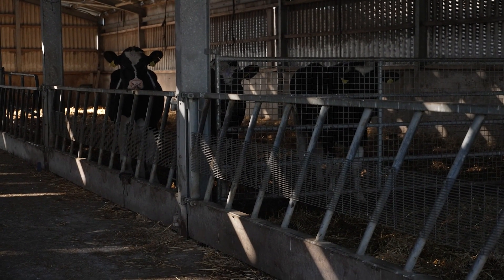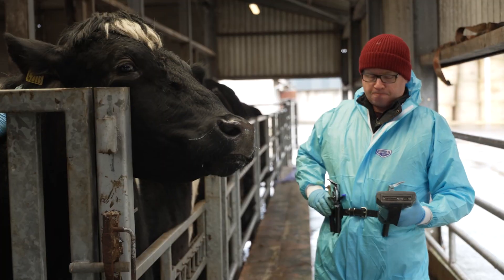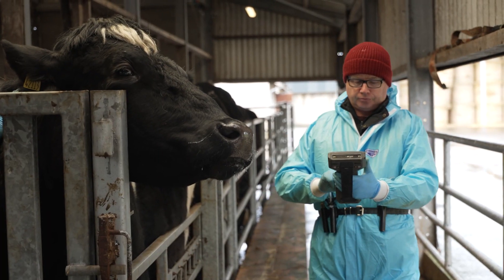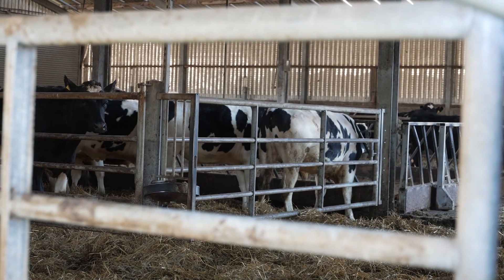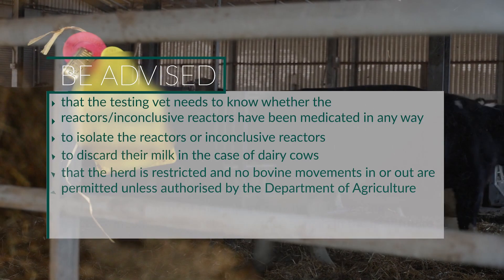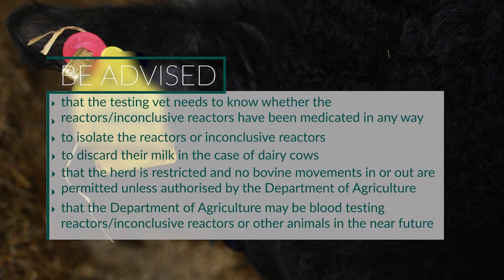Animals identified as reactors at a test must be tagged with a reactor tag and a red disc in the left ear, and the details recorded. When animals are deemed reactor or inconclusive, the keeper must be advised by the testing vet that the reactors or inconclusive reactors should be isolated, their milk discarded in the case of dairy cows, and that the herd is restricted with no bovine movements in or out permitted unless authorized by the Department of Agriculture. The Department of Agriculture may carry out blood testing of reactors, inconclusive reactors, or other animals in the near future.